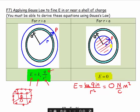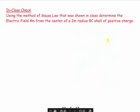Actually, I've got one more thing. Using the method of Gauss's law as shown in class, determine the electric field 4 meters from the center of a 2-meter radius, 8-coulomb shell of positive charge. Let's do it, though I wouldn't ask this question personally in my class.